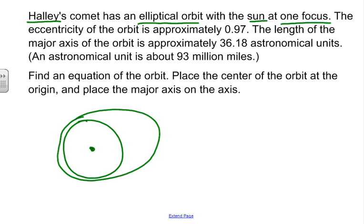The eccentricity of the orbit is approximately 0.97. Now eccentricity, if you recall, is c over a, and we know that equals 0.97. The length of the major axis of the orbit is approximately 36.18 astronomical units.